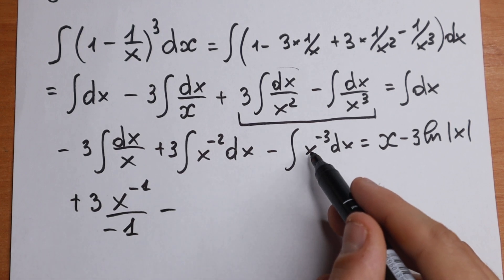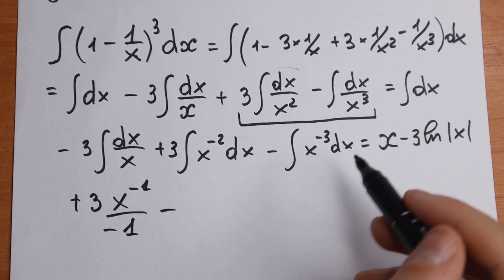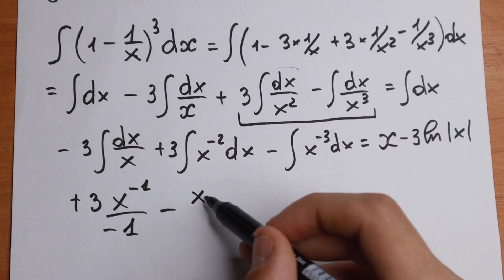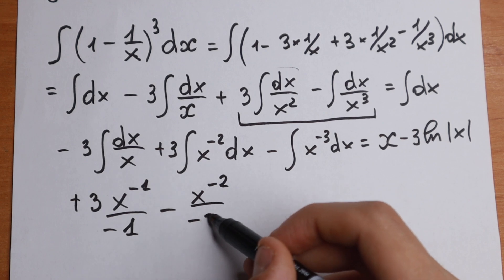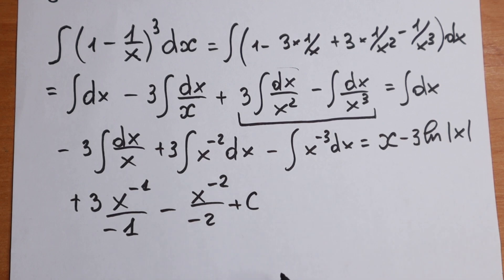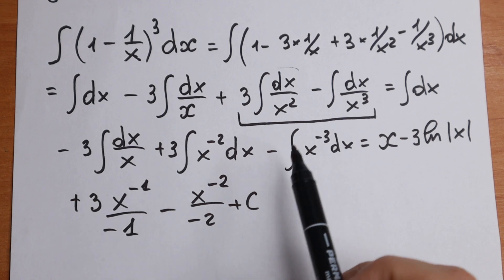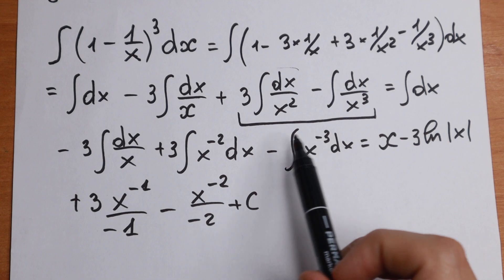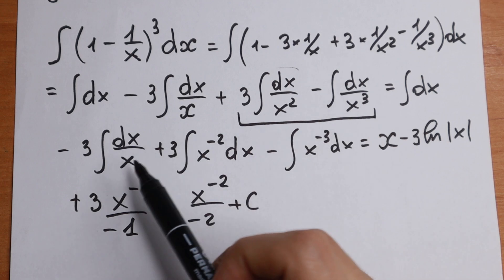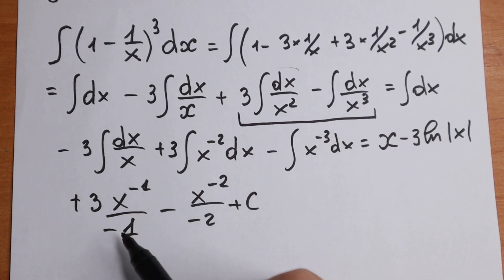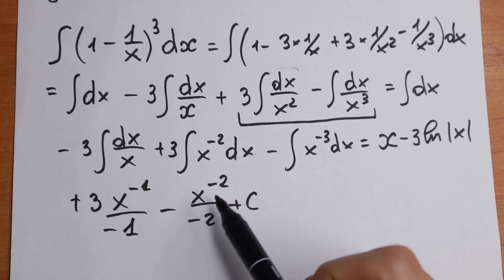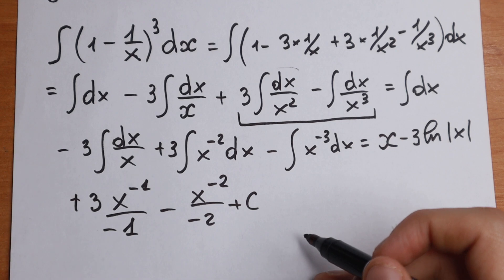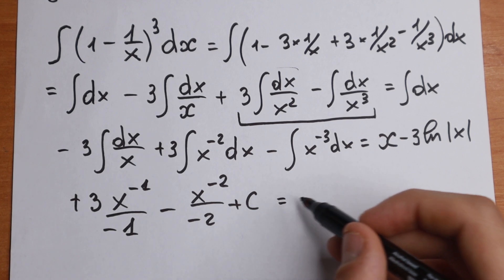For the last term, adding 1 to the power of x⁻³ gives x⁻², and dividing by −2 gives −x⁻²/(−2), plus the constant C. To be clear: for x⁻², we add 1 to get −1 and divide by −1; for x⁻³, we add 1 to get −2 and divide by −2.